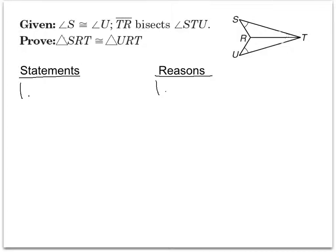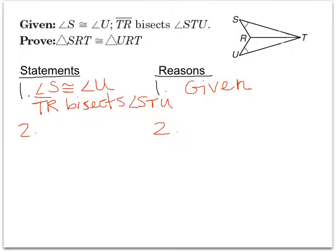Here we have another proof where we are trying to show that two triangles are congruent. We're given that angle S is congruent to angle U and that TR bisects angle STU. We'll add the given in right now. We only have one angle congruent between the two triangles, so we have to add more. Going back to the tips for sides, we can see the two triangles are literally sharing a side, so we can mark that side congruent and add it to our proof by the reflexive property.